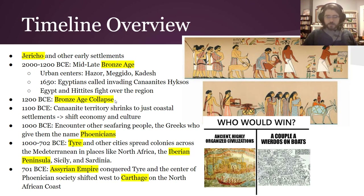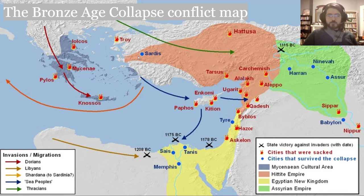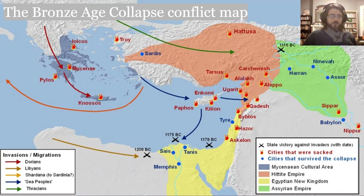Let's get back to this Bronze Age Collapse — this big reset button. There is this moment where all these ancient, highly organized civilizations might have gotten totally beaten up by a couple of weirdos on boats. This is one of the theories about why there's a sudden lack of historical sources and why all these places get burned to the ground and all these empires collapse at the same time. All these different people — maybe fleeing something or invading something — move across generally going east. The Hittite Empire, the Egyptian New Kingdom, the early Assyrian Empire — they all get their stuff burned down. The Egyptians just barely resist this and just barely hold themselves together, but they lose control of this region, which is set in flames.